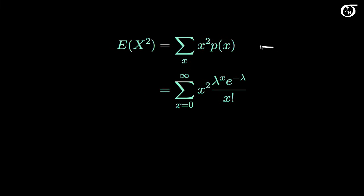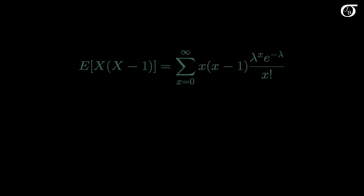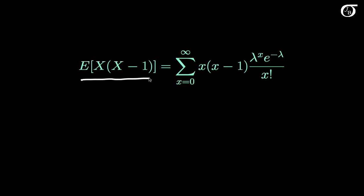For discrete random variables, the expectation of x squared is equal to the sum over all possible values of x, of x squared times its probability of occurring. For the Poisson distribution we cannot cancel the x squared term with terms in the denominator — we can cancel one x but not both. So we're going to use a trick: instead of finding E[x squared] directly, we'll first find the expectation of x times x minus 1, which makes both x terms easy to cancel with the x factorial in the denominator. It also makes E[x squared] easy to find, since E[x(x-1)] equals E[x squared minus x].